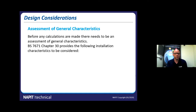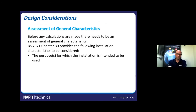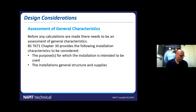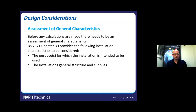Before we even consider what kind of circuit or load we've got, we've got to look at general characteristics. Chapter 30 says the installation characteristics should be considered. What's the installation going to be used for? Some of you will be designing for a building that hasn't even been built yet — it could be commercial or industrial. We need to know what kind of general structure it's going to be, what supplies are going in — are we going to have a TT, TN-CS, PME, or an IT supply? We also have to look at any external influences: where it's going to be, what it's going to be subjected to, who's going to use it, how often, and equipment compatibility.